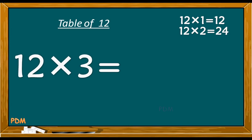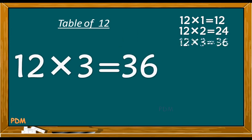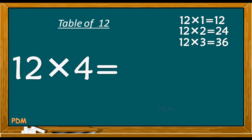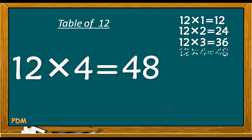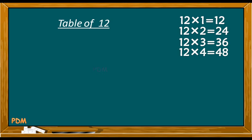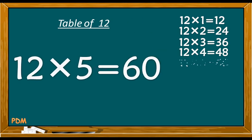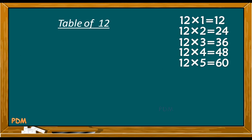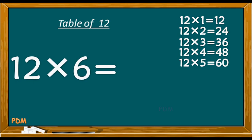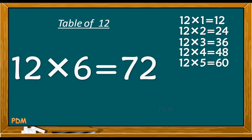Twelve threes are thirty-six. Twelve fours are forty-eight. Twelve fives are sixty. Twelve sixes are seventy-two.